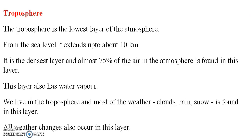The first one is the troposphere. The troposphere is the lowest layer of the atmosphere. From the sea level, it extends up to 10 km. It is a dense layer and almost 70% of air in the atmosphere is found in this layer. It contains water vapor. We live in the troposphere and most of the weather, clouds, rain, and snow is found in this layer.